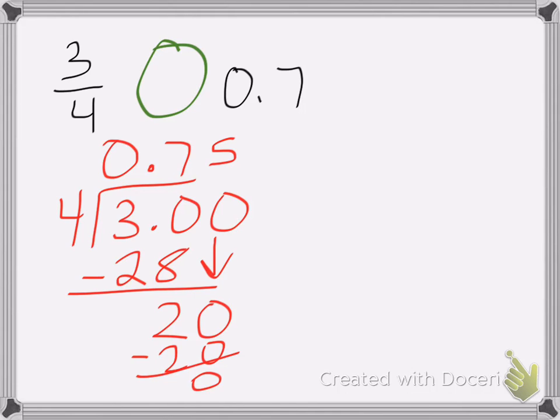So 3 fourths is greater than 0.7. Okay, and that's it. Good luck on your homework.